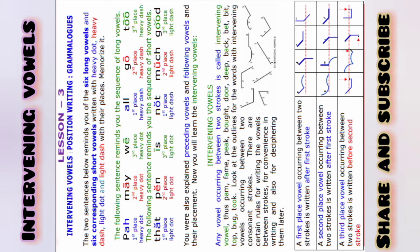There are certain rules for writing the vowels between strokes. The intervening vowels and their outlines are shown in the picture, so watch this. A first place vowel occurring between two strokes is written after the first stroke.